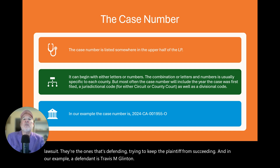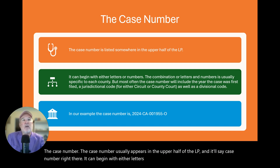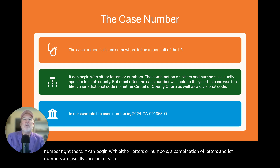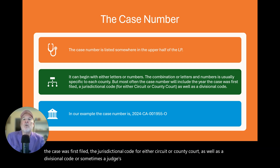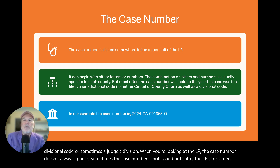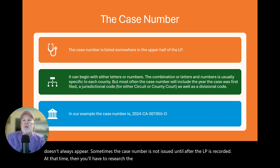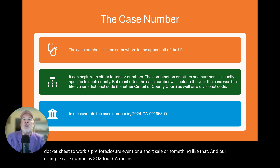The case number usually appears in the upper half of the LP. It can begin with either letters or numbers, or a combination — letters are usually specific to each county. Most often the case number will include the year the case was first filed, the jurisdictional code for either circuit or county court, as well as a divisional code or sometimes a judge's division. When looking at the LP, the case number doesn't always appear — sometimes it's not issued until after the LP is recorded. In our example: 2024 CA means circuit court, CO means county court, SC means small claims court.